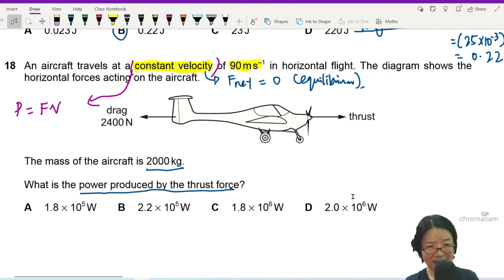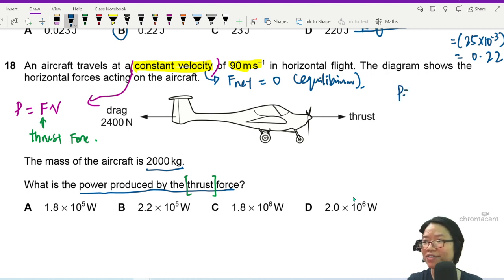So I will take the thrust force, the engine's forward thrust force. So I'm going to use P equal to FV.